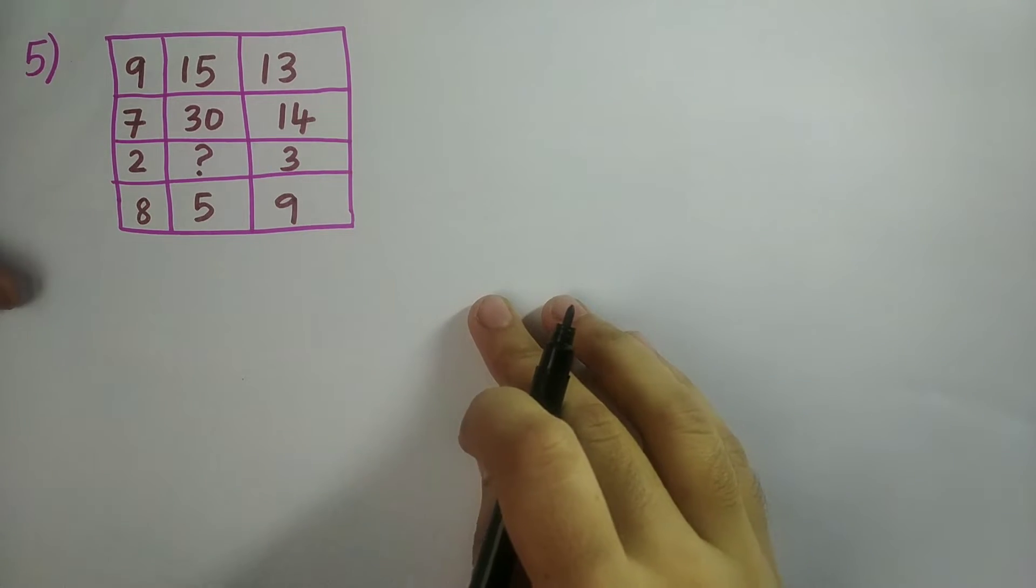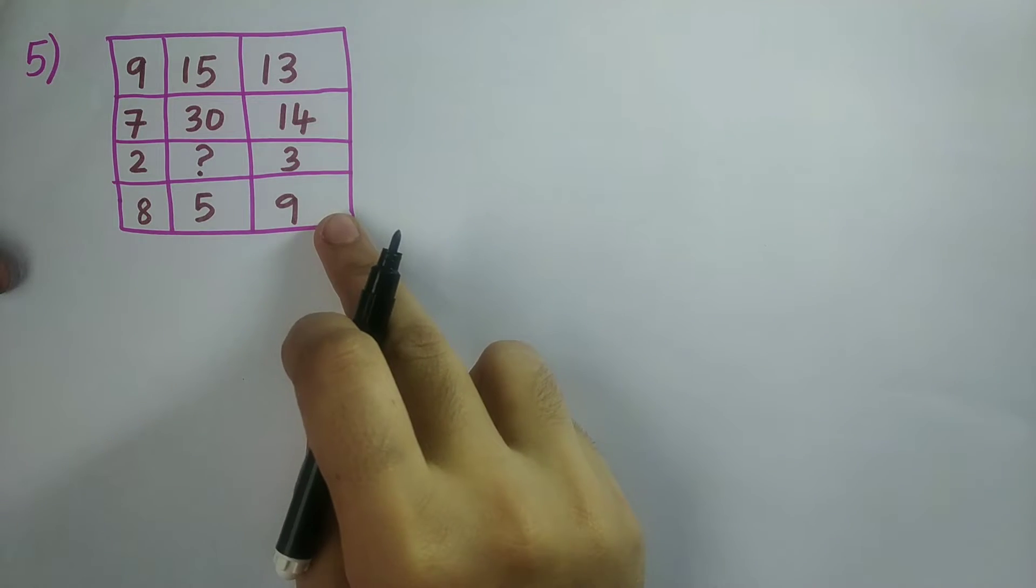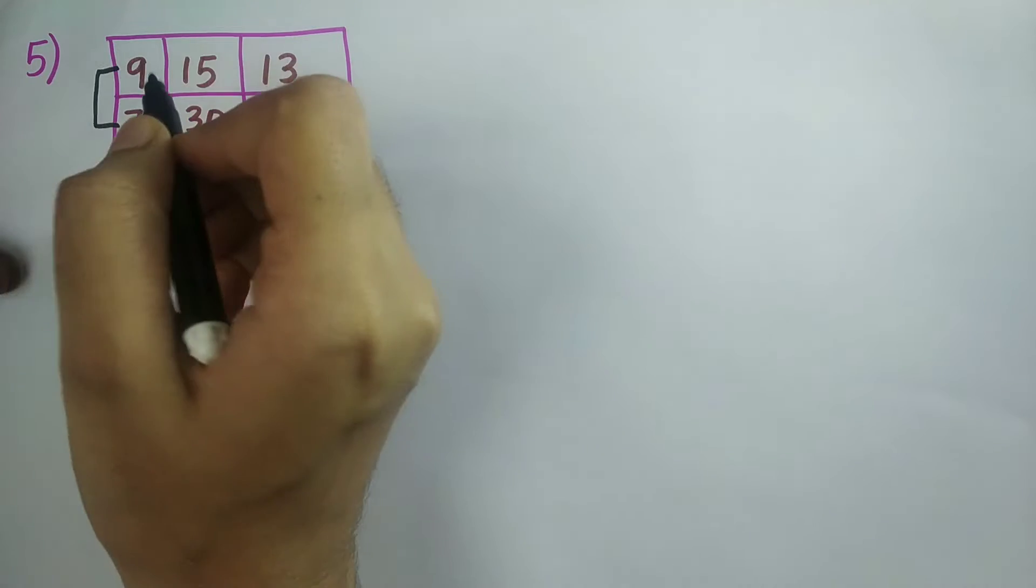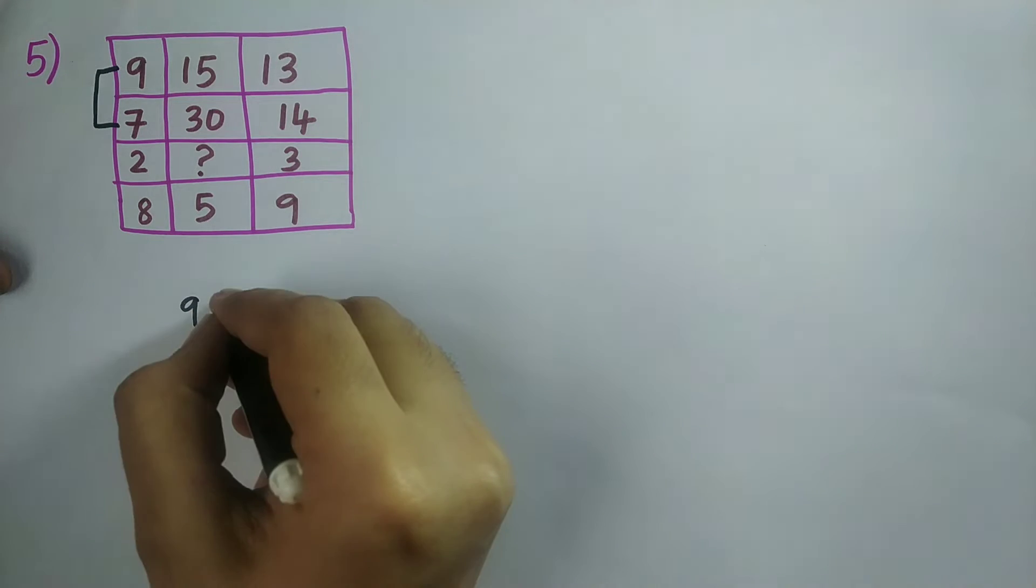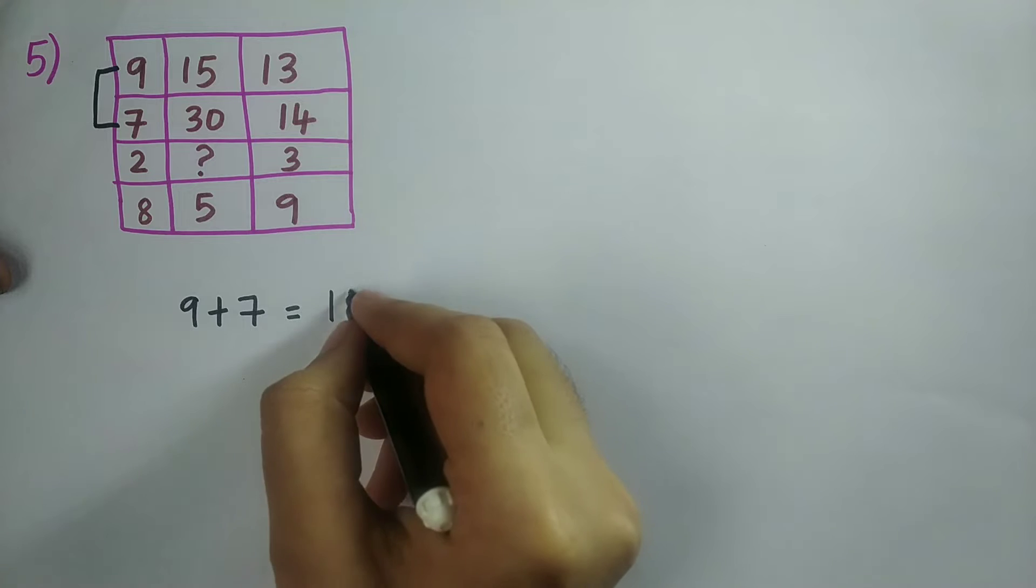The logic for this sum is we need to go column-wise and solve. We need to add this number with the second number. So 9 plus 7 which is equal to 16.